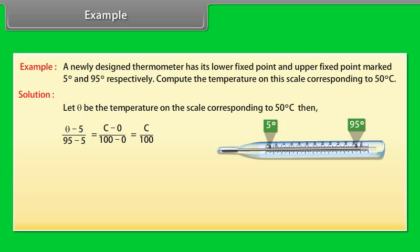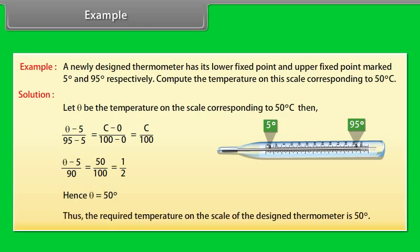On simplifying, we get (theta − 5)/90 is equal to 50/100. Hence, theta is equal to 50 degrees. Thus, the required temperature on the scale of the designed thermometer is 50 degrees.